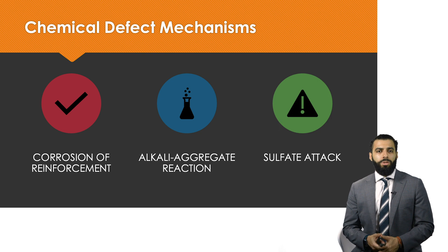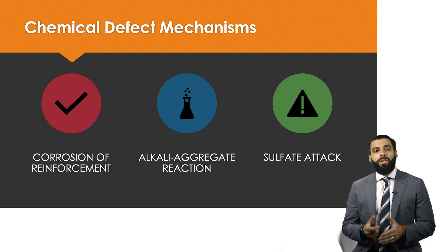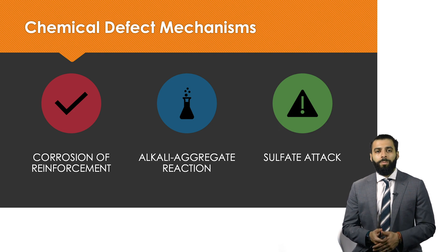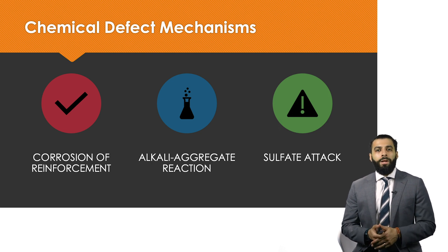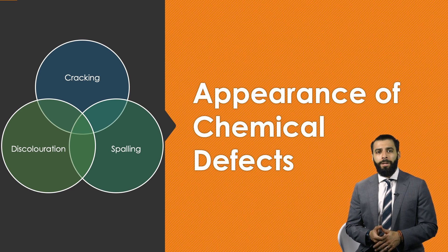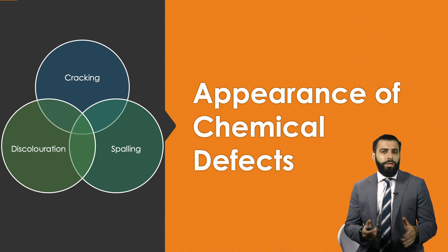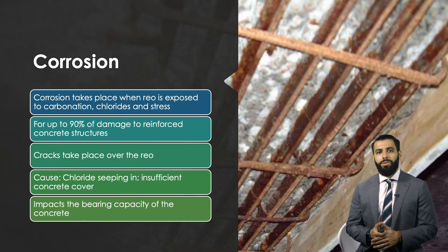Chemical defects are a result of three main mechanisms. The first is corrosion of the reinforcement — concrete contains steel reinforcement embedded in it to increase its tensile strength, and this reinforcement is prone to corrosion, which creates all sorts of issues. The second mechanism is the alkali aggregate reaction, and finally we have sulfate attack. In terms of appearances, chemical defects present in three main forms: cracks, spalling, or discoloration.